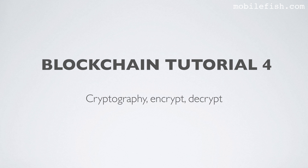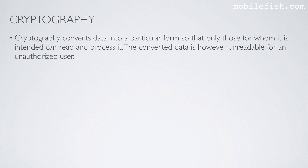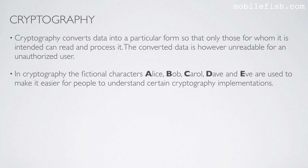In this video I will explain what cryptography is and also what encrypt and decrypt means. Cryptography converts data into a particular form so that only those for whom it is intended can read and process it. The converted data is however unreadable for an unauthorized user. In cryptography, the fictional characters Alice, Bob, Carol, Dave and Eve are used to make it easier for people to understand certain cryptography implementations.